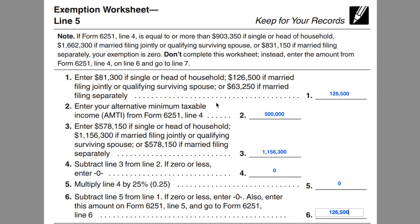In line 2, you'll enter your Alternative Minimum Taxable Income, or AMTI, from line 4. In this case, we put in $500,000. We'll walk through the rest of this tax form, and then we'll play with this number to see how that impacts the rest of the worksheet.